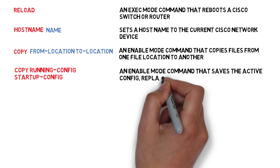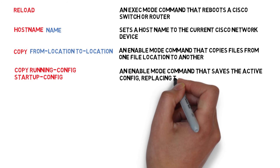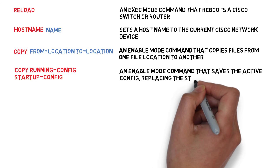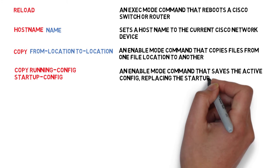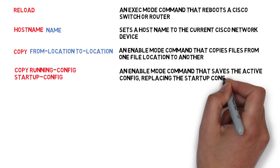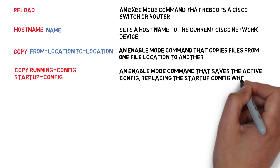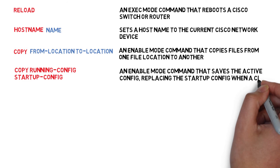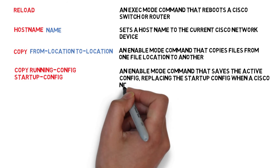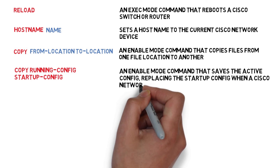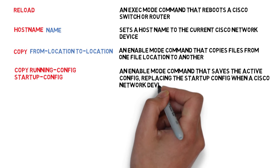Copy running-config startup-config. An enable mode command that saves the active config, replacing the startup config when a Cisco network device initializes.